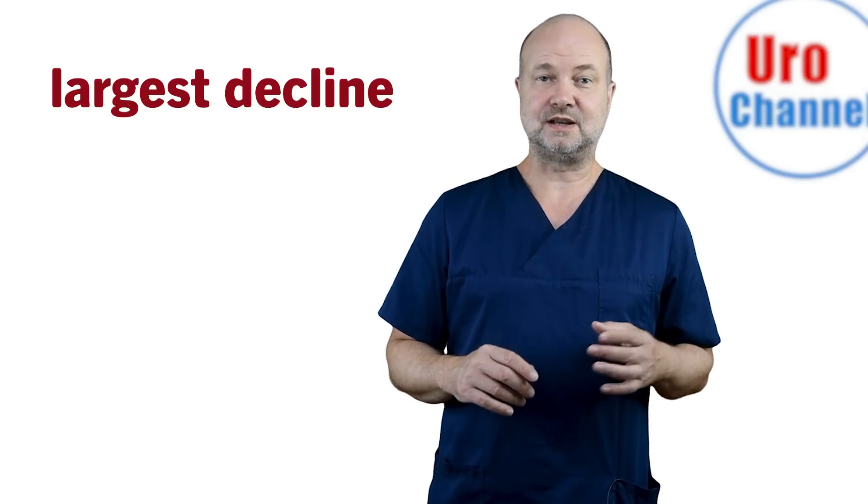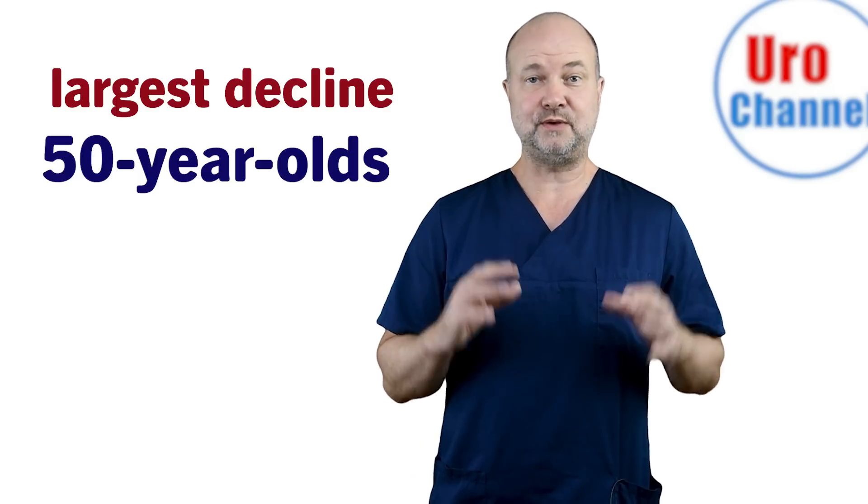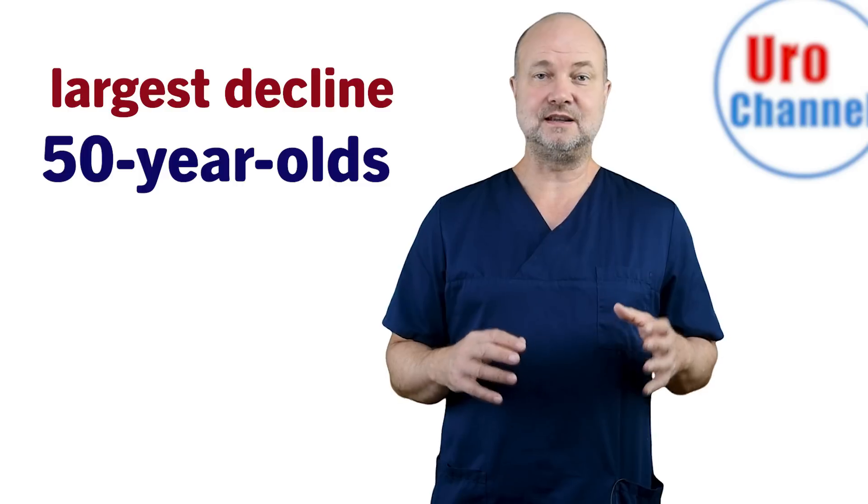This is remarkable, as married couples traditionally have more sex. If there were kids between the age of 6 to 17 in the household, that had a significant negative impact too. The age group which declined the most were those in their 50s. Generally, a decline was seen in all age groups, regions, across ethnicities, and so on.